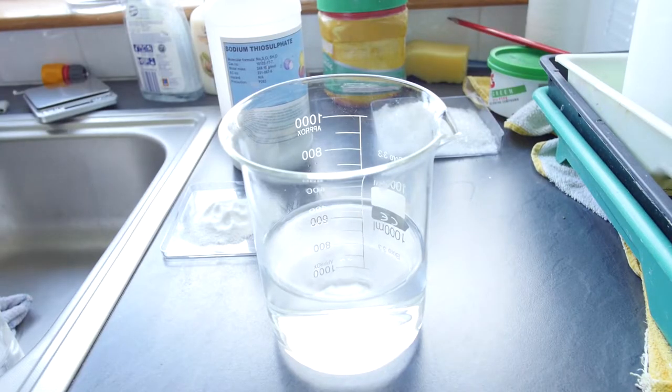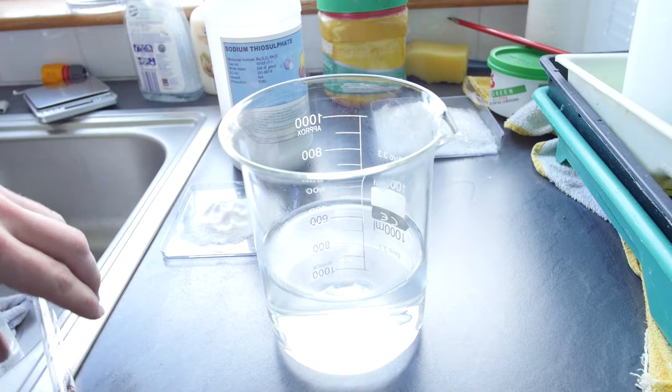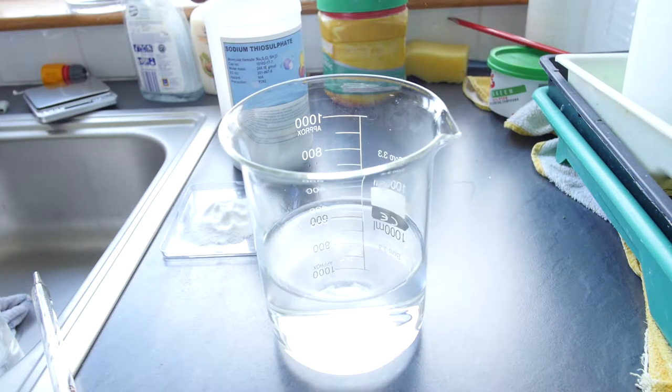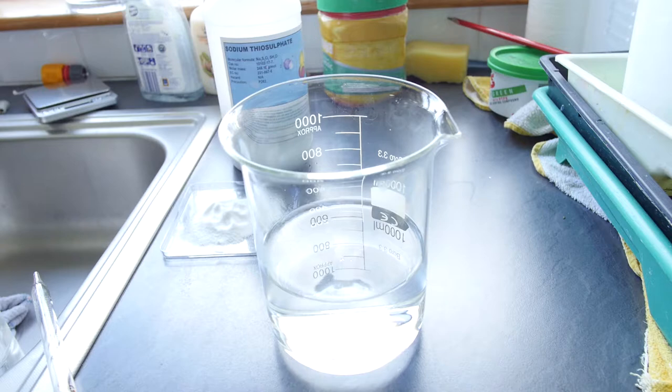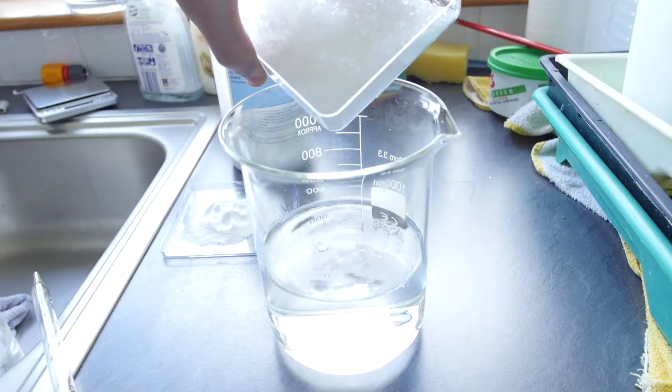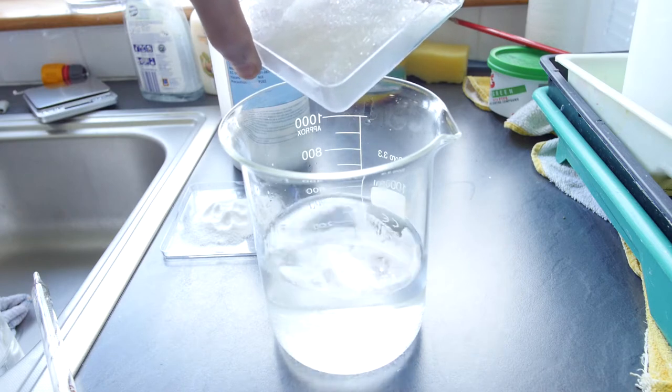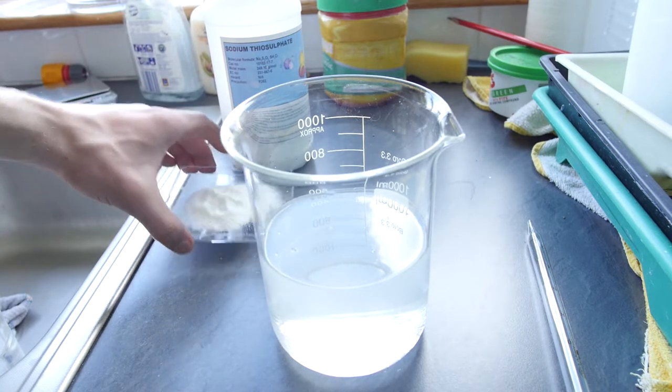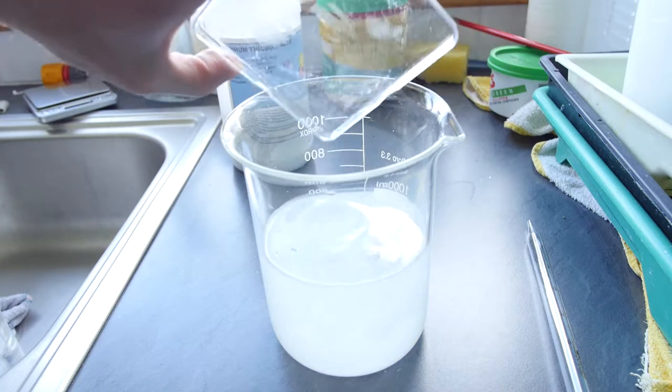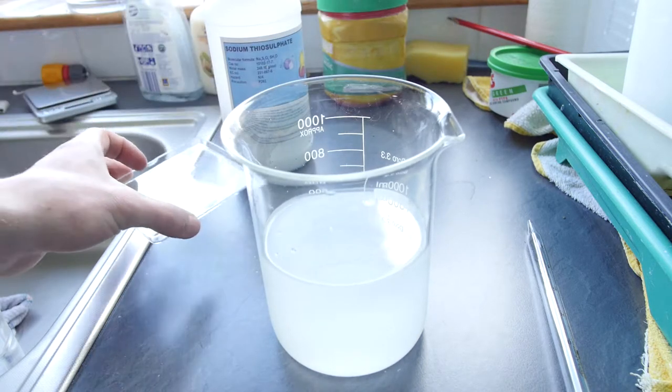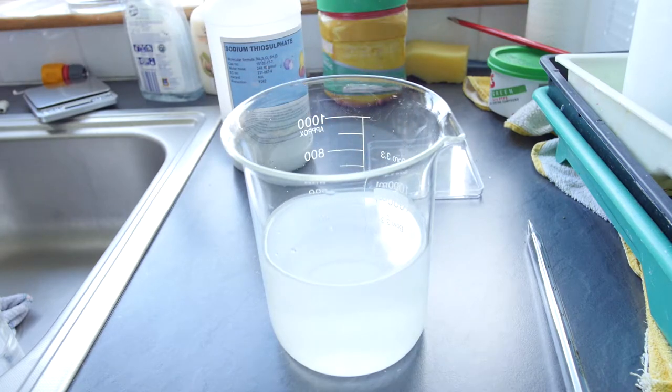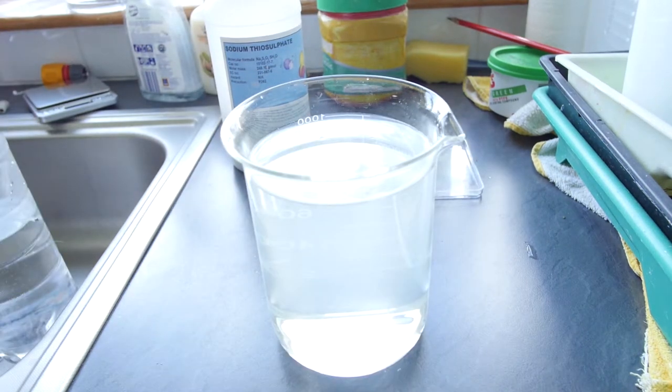To begin making your fixer, add 500 milliliters of hot water to a beaker, then add 200 grams of sodium thiosulfate and stir until dissolved. Once dissolved, add 20 grams of potassium metabisulfite, stir until dissolved, then add enough water to get it up to 1 liter and your fixer is now ready.